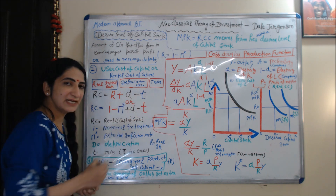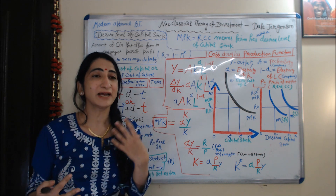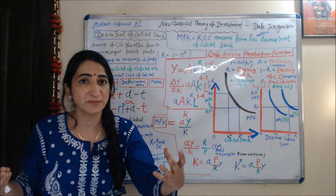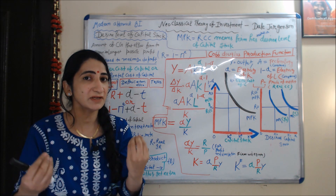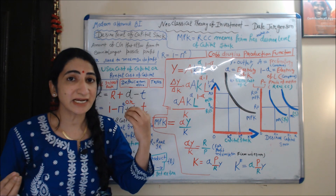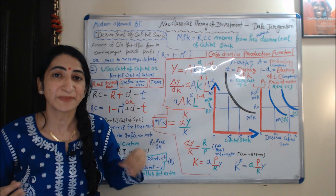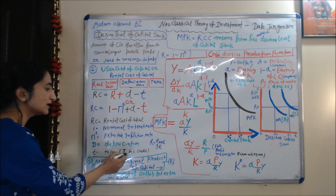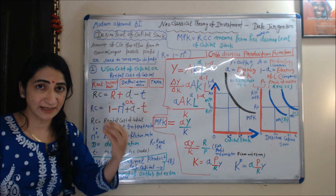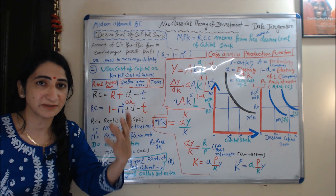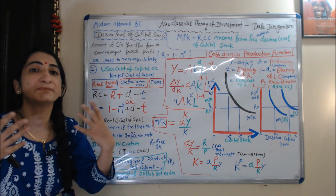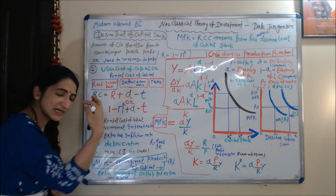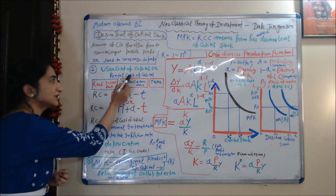T is taxes. When we are doing investment, we receive some tax rebate. Tax rebate means that when we make a specific investment, the government gives us some tax rebate — this is called investment tax credit. This tax rebate reduces our rental cost, that's why we subtract taxes from the rental cost of capital.